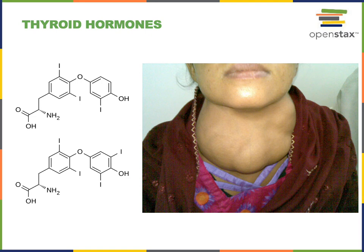On the left we see the chemical structure of the thyroid hormones, T3 on the top. T3 stands for triiodothyronine because the chemical structure of T3 contains three iodine atoms. T4, also known as thyroxine, contains four iodine atoms in its chemical structure. Because the thyroid hormones contain iodine, dietary iodine deficiency impairs the synthesis of thyroid hormones, and this can lead to a goiter — an overgrowth of the thyroid gland, which is shown in the picture on the right.